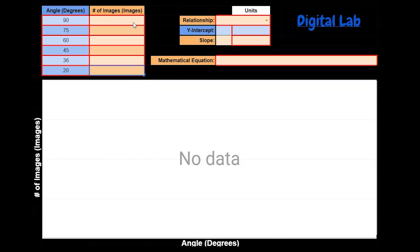the data will automatically propagate in the graph below. This graph will visually show you the relationship between the angle and the number of images created.